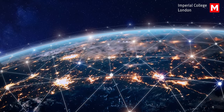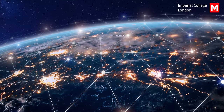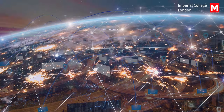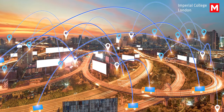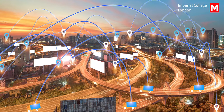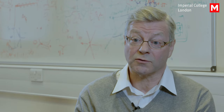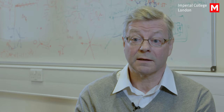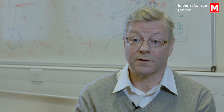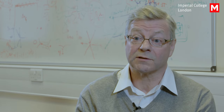We need new types of navigation because at the moment the world relies very heavily on the global network of satellites to tell everybody where they are. And it's actually rather easy for that system to be disrupted, and in fact it's been estimated that the UK alone stands to lose about a billion pounds a day if the satellite navigation system were denied.